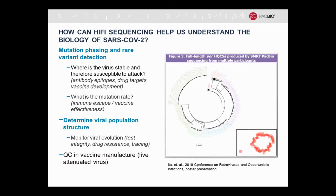My first application is SARS-CoV-2 sequencing. How can HiFi sequencing help us understand the biology of this virus? The main applications fall under mutation phasing and rare variant detection. These types of questions are really important to researchers who may be looking to understand the epidemiology of the pandemic or to develop vaccines or even therapeutics. In order to determine where the virus genome is stable and therefore susceptible to attack, you really need to have highly accurate information about variants along the full length of the genome. Applications might include determining what part of the virus antibodies are binding to successfully in a successful immune response, and also for evaluating vaccine effectiveness.